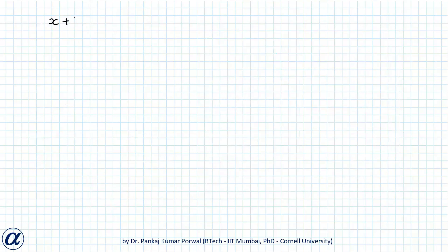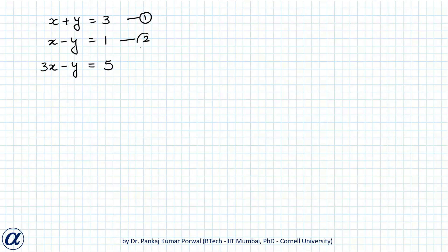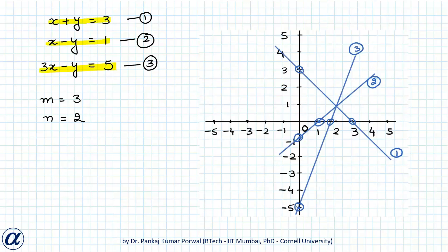Next, consider an example where the equations are linearly dependent: x plus y equals 3, x minus y equals 1, and 3x minus y equals 5, calling them equations 1, 2, and 3. Here m equals 3 and n equals 2, so m is greater than n.